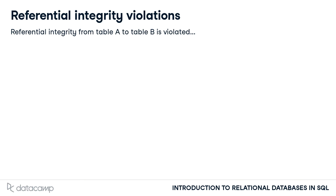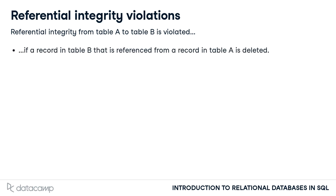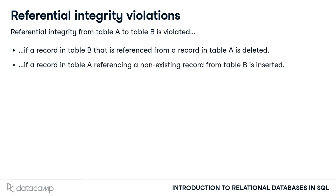Referential integrity can be violated in two ways. Let's say table A references table B. If a record in table B that is already referenced from table A is deleted, you have a violation. On the other hand, if you try to insert a record in table A that refers to something that does not exist in table B, you also violate the principle.